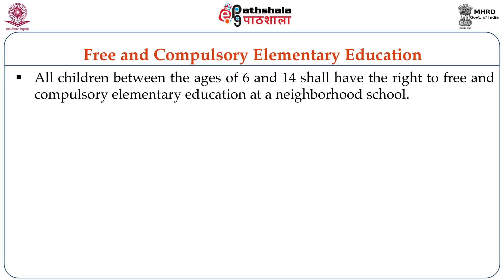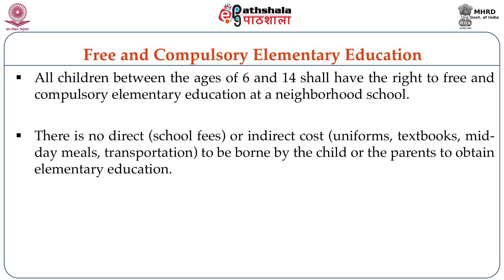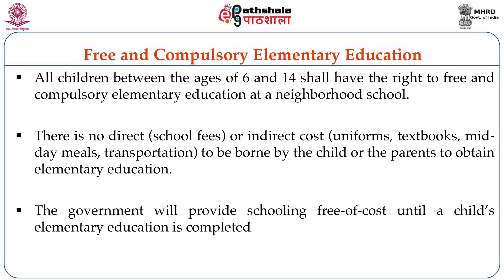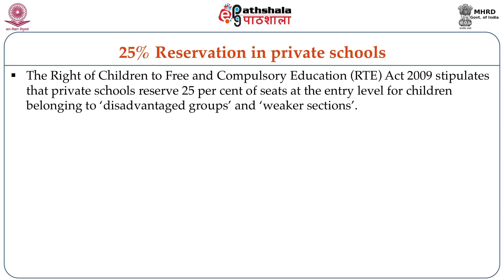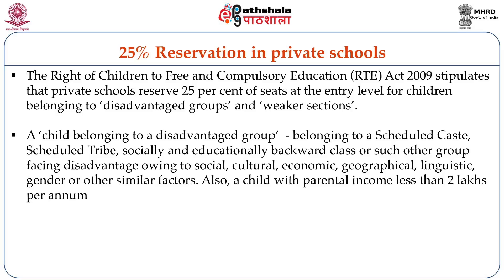Free and compulsory elementary education means there is no direct school fee or indirect cost — such as for uniforms, textbooks, midday meals, and transportation — to be borne by children or parents to obtain elementary education. The government will provide schooling free of cost until a child's elementary education is completed. One key innovation of the Right to Education Act is that it stipulates private schools must reserve 25% of their seats at the entry level for children belonging to disadvantaged groups and weaker sections — including scheduled castes, scheduled tribes, socially or educationally backward classes, or any groups facing disadvantage owing to social, cultural, economic, geographical, linguistic, gender, or other similar factors.